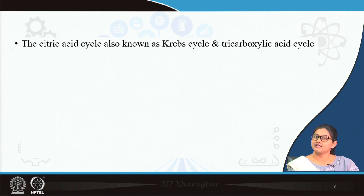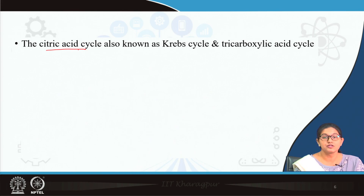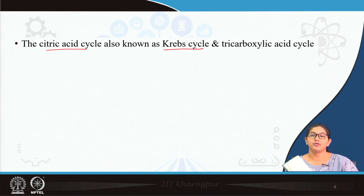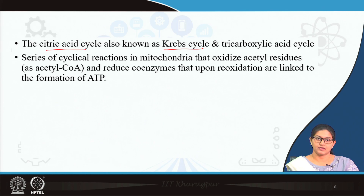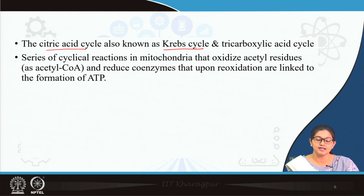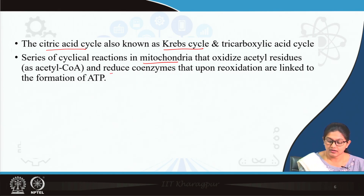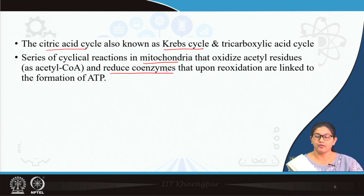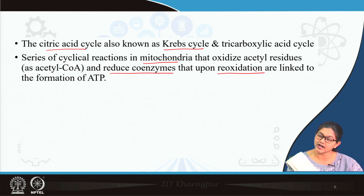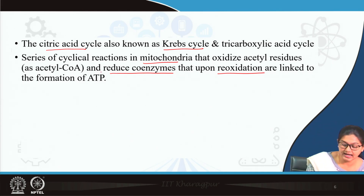TCA cycle is the tricarboxylic acid cycle, also known as citric acid cycle, and also known as Krebs cycle — named after its discoverer Hans Krebs. It is a cyclical metabolic pathway where there are series of cyclical reactions inside mitochondria that oxidize the acetyl residue of acetyl coenzyme A. The reduced coenzyme forms undergo reoxidation in the electron transport chain, which forms ATP.